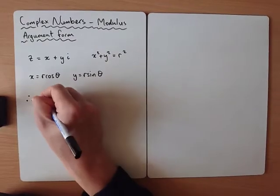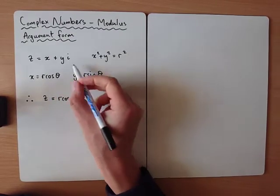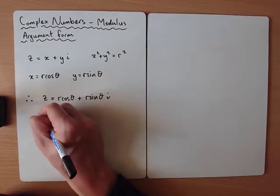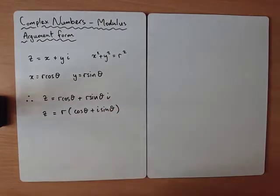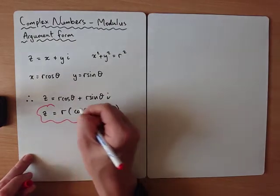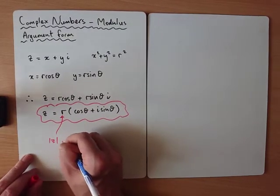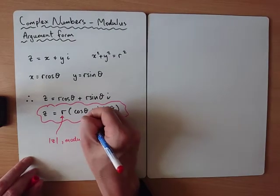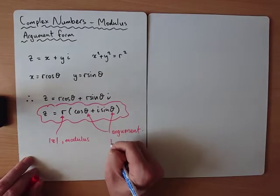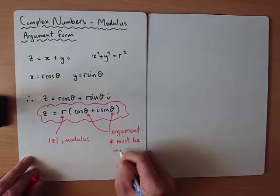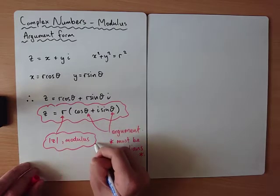The modulus argument form of a complex number is Z = r(cos θ + i sin θ), where x = r cos θ and y = r sin θ. Here r represents the modulus (magnitude) and θ represents the argument. Be careful: θ must be in radians. If you haven't seen radians before, watch the other video on radians.